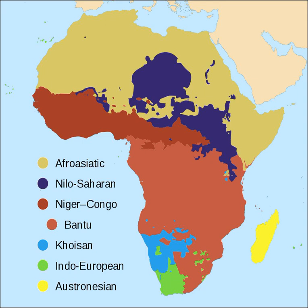Widespread syntactical structures include the common use of adjectival verbs and the expression of comparison by means of a verb. The Niger-Congo languages have large numbers of genders which cause agreement in verbs and other words. Case, tense and other categories may be distinguished only by tone. Quite often, only one term is used for both animal and meat — the word nama or nyama for animal/meat is particularly widespread in otherwise widely divergent African languages.